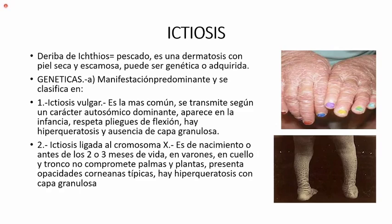La ictiosis vulgar: aparece en la infancia, aunque ya nace con ella. Solo que no se nota al principio; después, a los dos o tres meses, ya aparece. Respeta los pliegues de flexión, esta ictiosis vulgar no existe en los pliegues de flexión. Hay hiperqueratosis y ausencia de la capa granulosa; hay que hacer biopsia para ver si existe o no la capa granulosa.